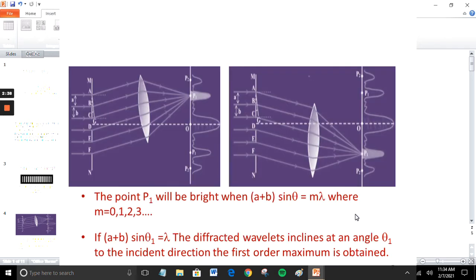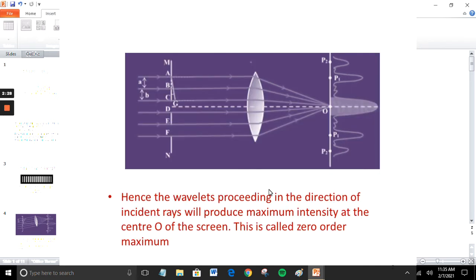The point P1 will be bright when (A + B) sin theta equals M lambda, where M equals 0, 1, 2, 3. In the undiffracted position, theta equals 0, hence sin theta equals 0. (A + B) sin theta equals 0, which satisfies the condition for brightness.